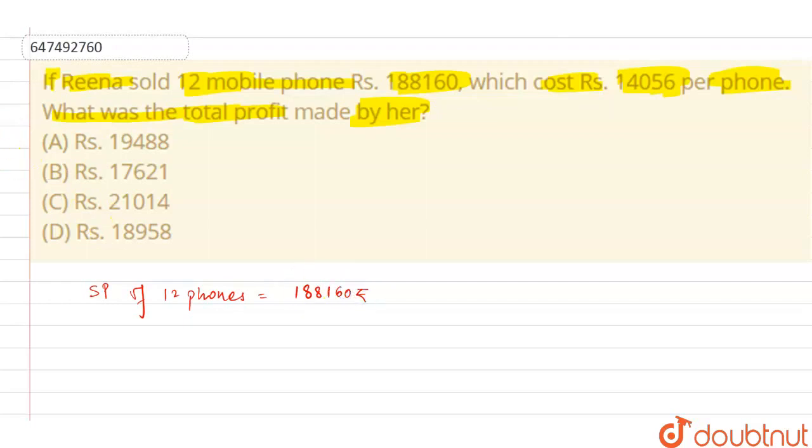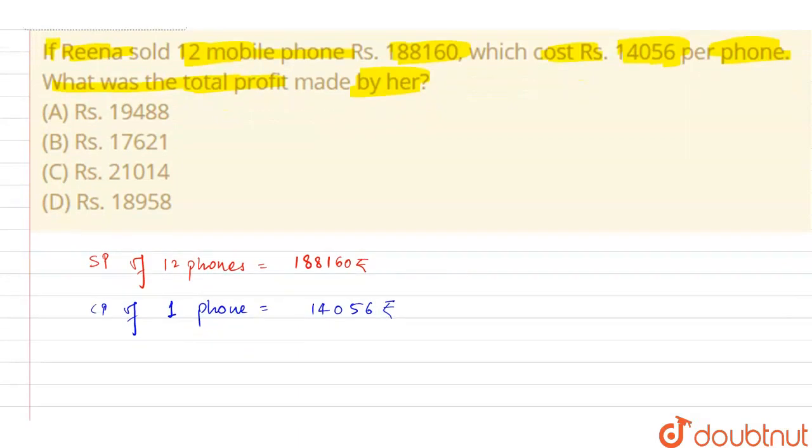Similarly, we have the CP given, the cost price of one phone, that is Rs. 14,056. When one phone has this cost price, then I can say...